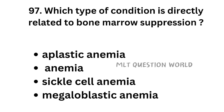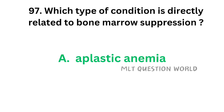Question number 97. Which type of condition is directly related to bone marrow suppression? Option A: Aplastic anemia, Option B: Anemia, Option C: Sickle cell anemia, Option D: Megaloblastic anemia. The correct answer is Option A — Aplastic anemia. Aplastic anemia is directly related to bone marrow suppression.